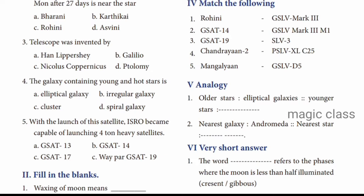Question number 5: With the launch of this satellite, ISRO became capable of launching 4-ton heavy satellites. We studied the ISRO topic and saw that more than 100 satellites were launched by ISRO at one time. And at one time they launched a 4-ton heavy satellite. The answer is Option D, GSAT-19.